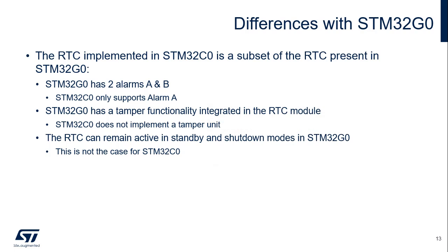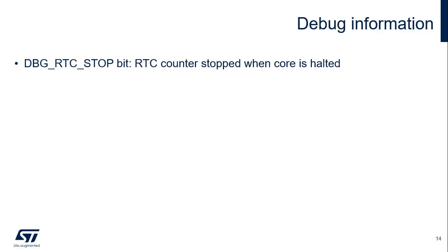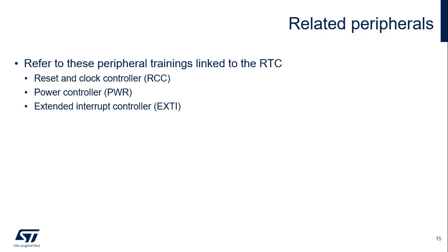The RTC of the STM32C0 is a subset of the one present in the STM32G0. The features removed for cost and consumption reasons are: the second alarm B, the tamper unit, and the backup domain—and therefore the capability of maintaining the RTC active in standby and shutdown modes. A bit is available in the MCU debug interface to stop the RTC counter when the core is halted for debugging. Related peripherals include the reset and clock controller, the power controller, and the extended interrupt controller.